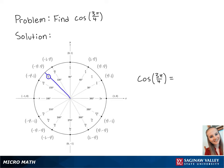Cosine correlates to the x-coordinate on the unit circle. So cosine of 3 pi over 4 is equal to negative square root of 2 over 2. And this is the final answer.